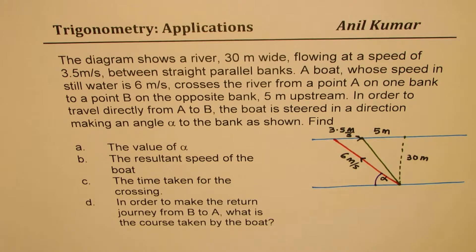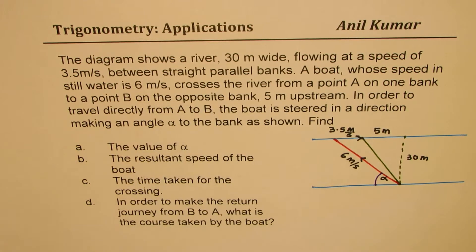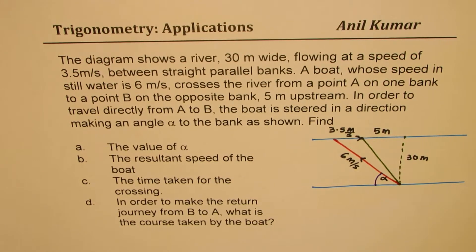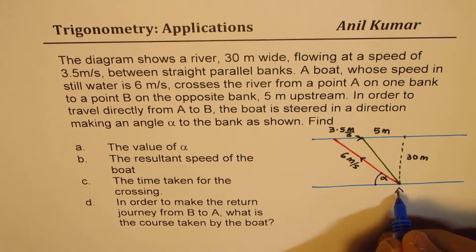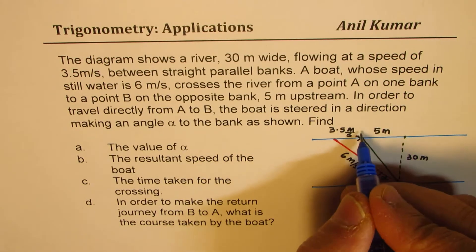Let's go through the question. The diagram shows a river 30 meters wide flowing at a speed of 3.5 meters per second between straight parallel banks. A boat whose speed in still water is 6 meters per second crosses the river from a point A on one bank to point B on the opposite bank, 5 meters upstream. So this is B.